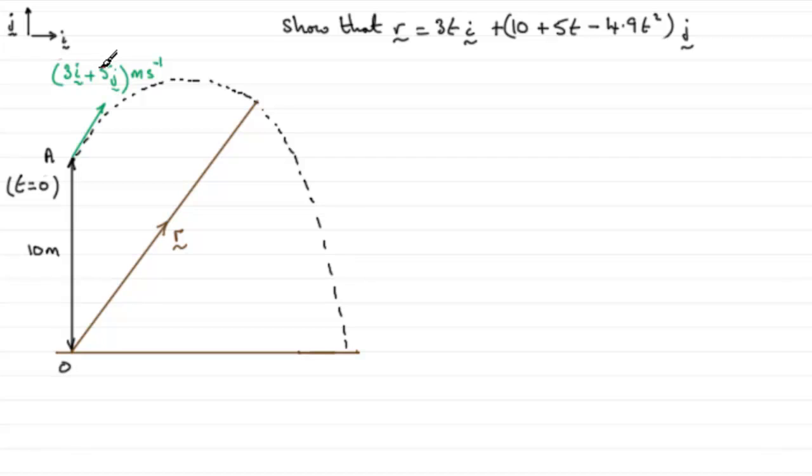The particle is projected with this velocity 3i plus 5j meters per second. So I'd first of all want to split this into two components because with projectiles we consider the horizontal and vertical motion separately. So for the horizontal motion,